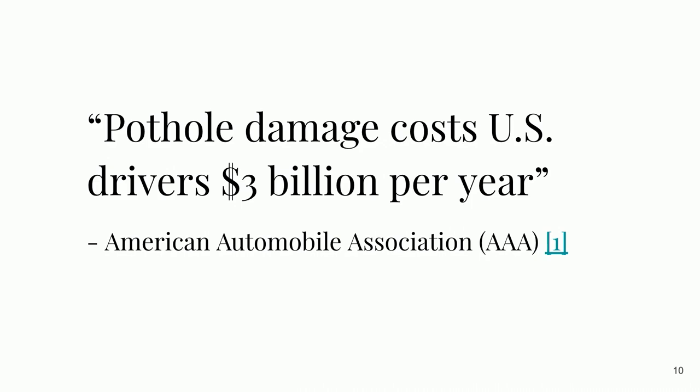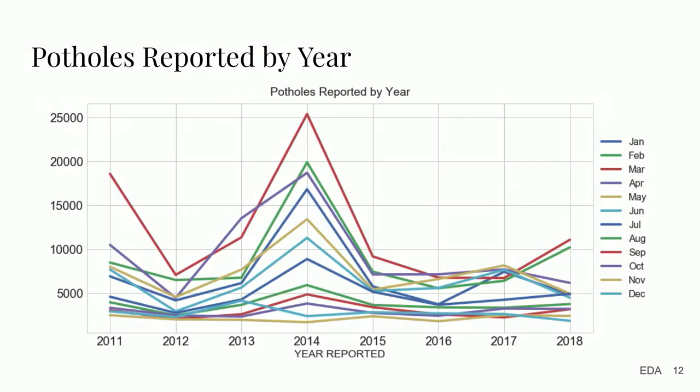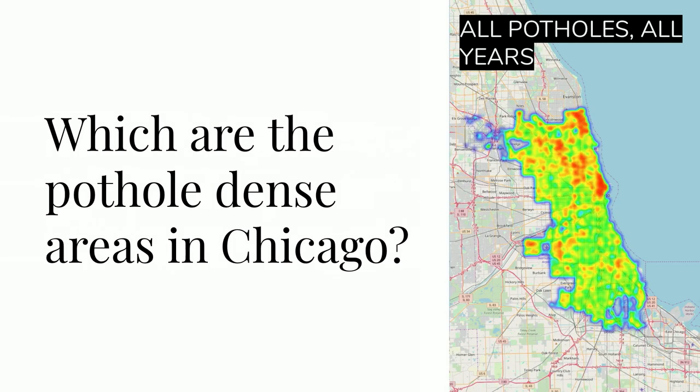Pothole damage costs United States drivers over $3 billion per year — a number quoted by AAA. To combat the pothole epidemic, autonomous vehicles are going to be used to fill potholes. We already have major companies with a lot of resources working on self-driving cars, so there's no reason we shouldn't be able to have these vehicles also work on potholes for public service. If you look at the potholes reported by year — where each line is a month, the bottom axis is the year, and the Y axis is the number of potholes — there's obviously a spike in 2014. The third highest snowfall and the third coldest winter in Chicago history was in 2014. It's not just that there was a lot of snow, but consistent snowfall over a long period combined with a lot of traffic and heavy vehicles creates a lot of potholes.